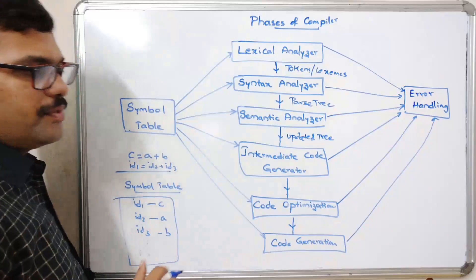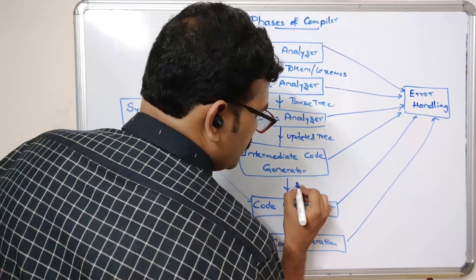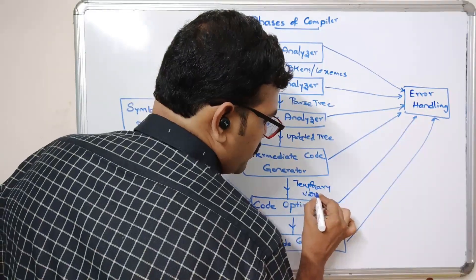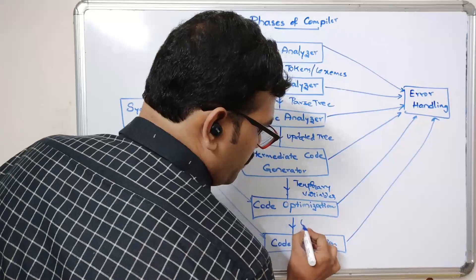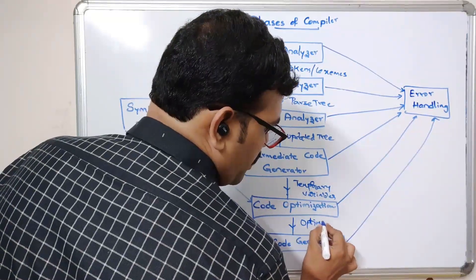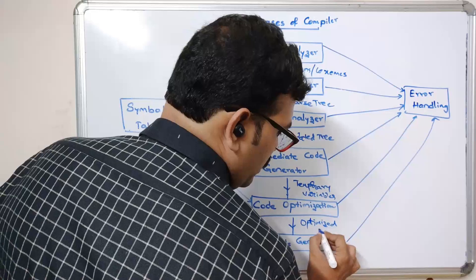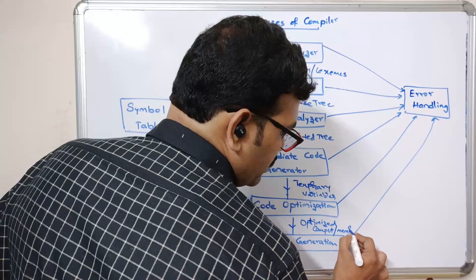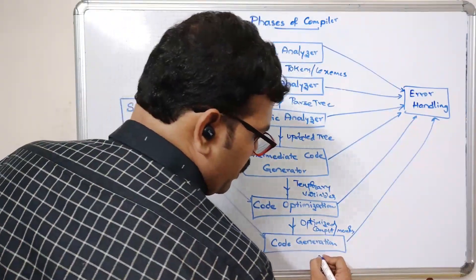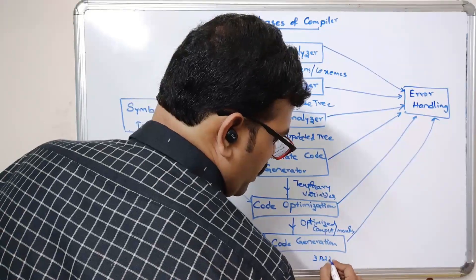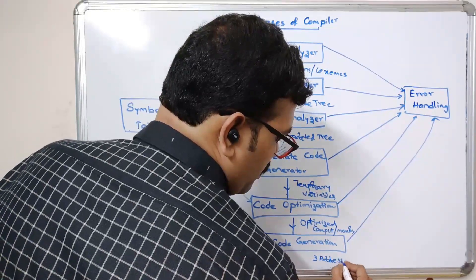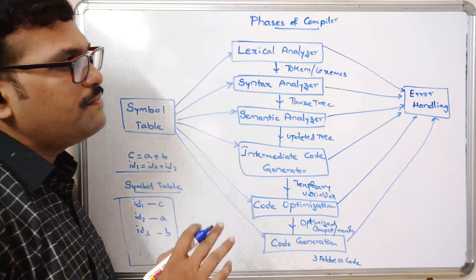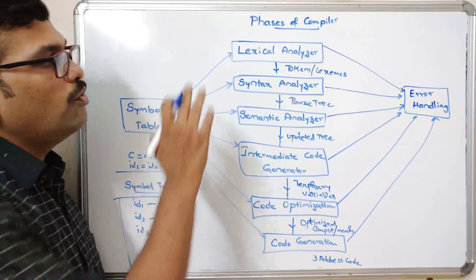The intermediate code generator uses temporary variables for the instructions. The code optimizer optimizes based on computations or memory — in both cases these are reduced. Finally, we get three address code, where instructions are written as three address code.